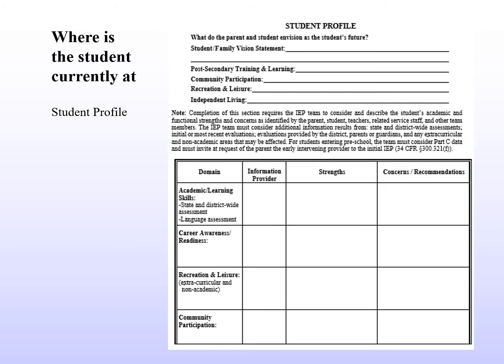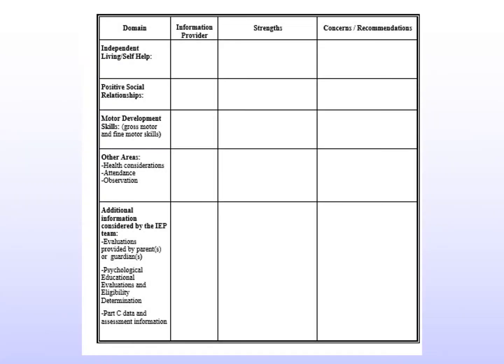This is the student profile page, where we look at where the student is currently at. At the top, it's important to gather input from the student, parents, and legal guardians — what they want for their student and where they see them. We look at student strengths and concerns across different areas like academics, career readiness, recreation and leisure, and community participation. The second page continues with independent living, self-help, social relationships, motor development skills, and other relevant information.